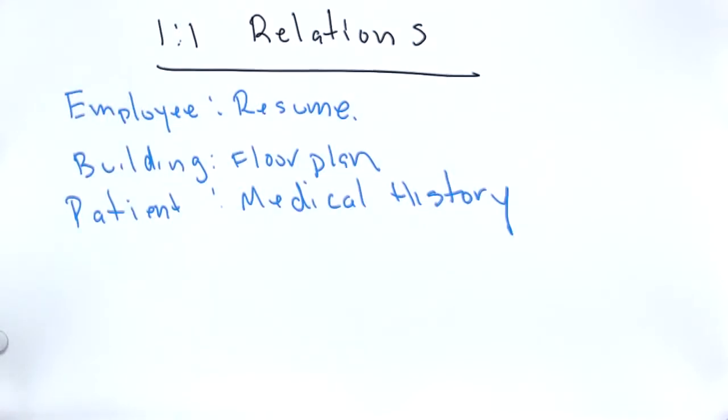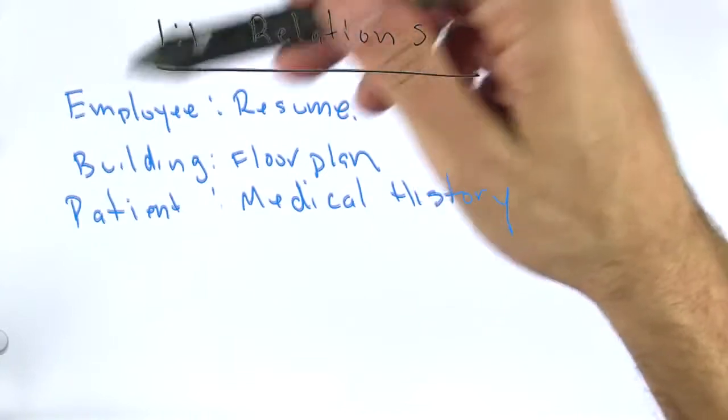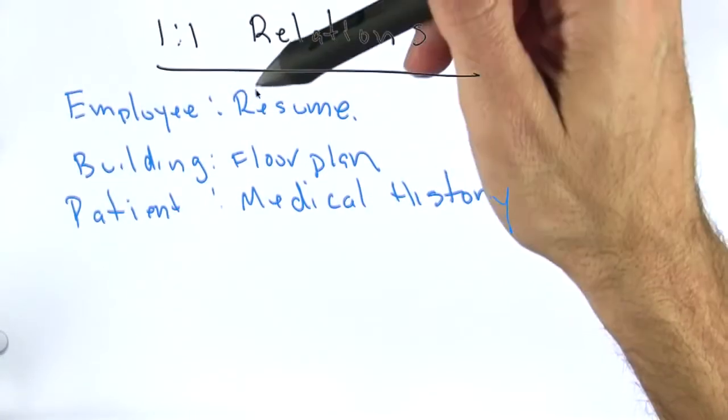Let's talk about one-to-one relations. One-to-one relations are relations where each item corresponds to exactly one other item.